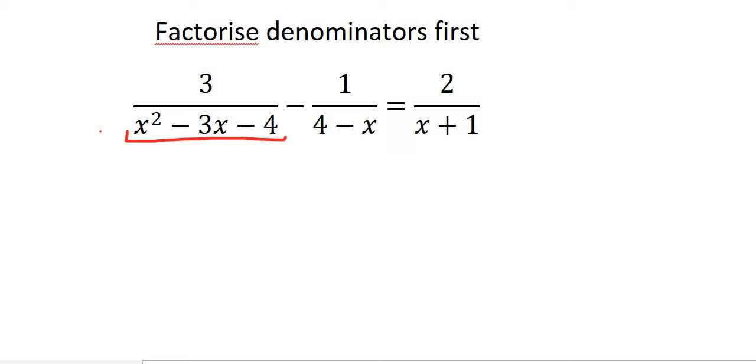So what do I mean? Well have a look here guys. This is a trinomial. Now we know how to factorize trinomials so whenever you get something like this you need to factorize it first. So that's going to be 3 over, now factorizing you would make two brackets and you would eventually end up with x minus 4 and x plus 1.